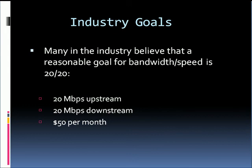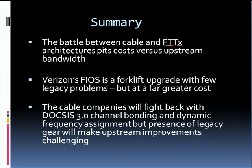We believe that the upstream delivery of 20 megabits per second will remain a challenge to both U-Verse and DOCSIS 3.0 architectures, for the reasons we have described in this tutorial. In summary, the battle between the cable and fiber-to-the-x architectures pits cost versus upstream bandwidth. Because Verizon's FIOS forklift upgrade has few legacy problems, it is likely to deliver more bandwidth in the near term, but at a far greater cost. The cable companies will fight back with DOCSIS 3.0 channel bonding and dynamic frequency assignment, but the presence of legacy gear in their networks will make upstream bandwidth improvements more challenging.